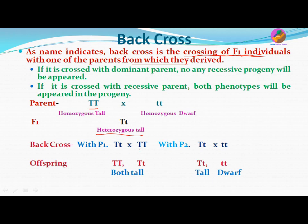When we carry out the back cross with the dominant parent, the F1 offspring crossed with the dominant parent gives two types of offspring: one is homozygous tall and one is heterozygous tall. There is no recessive offspring formed, so all the dominant progenies will appear — consistent with the first statement that no recessive progeny appears when crossed with the dominant parent.